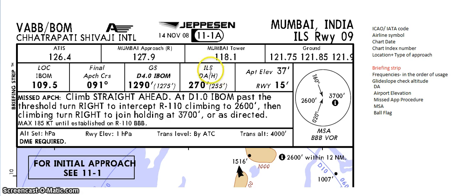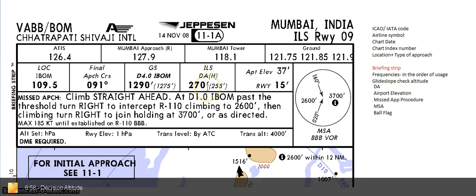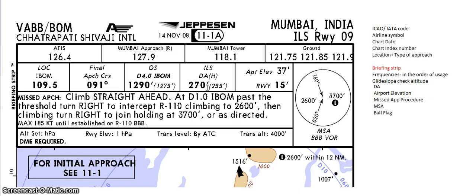This is the ILS decision altitude, which is 270 feet, with the above ground level shown in brackets. Why DA and not MDA? A decision altitude is an altitude to which you descend, and when you reach it you look outside — if you are visual with the runway, continue the approach; if not, immediately initiate the missed approach procedure. There is no time to think; it has to be instantaneous. That is the main difference from an MDA, or minimum descent altitude.